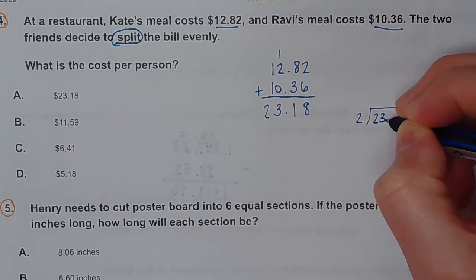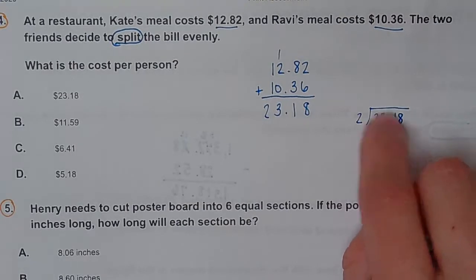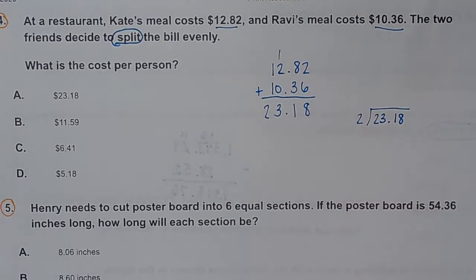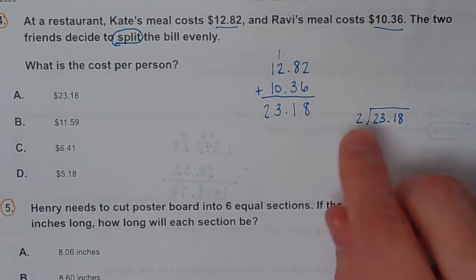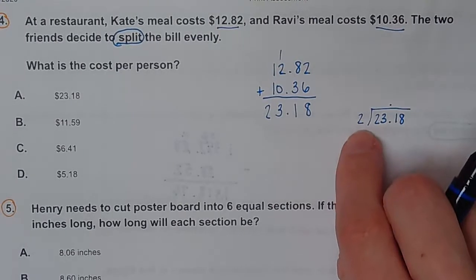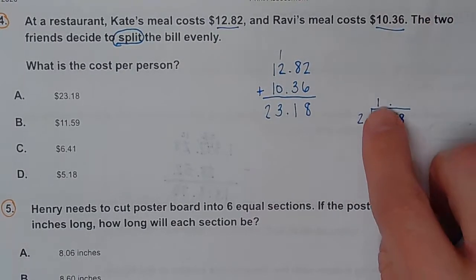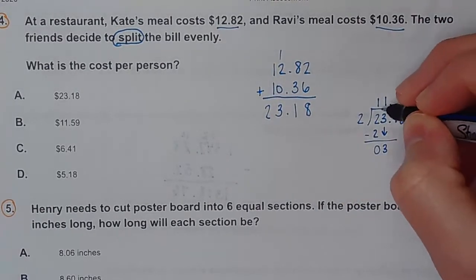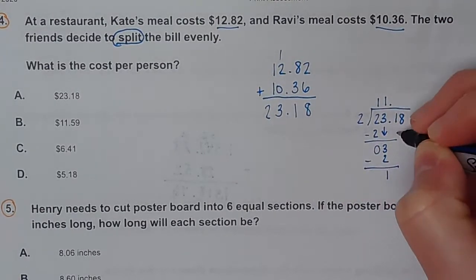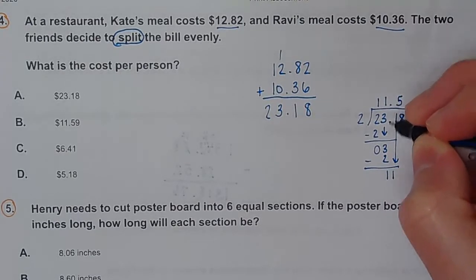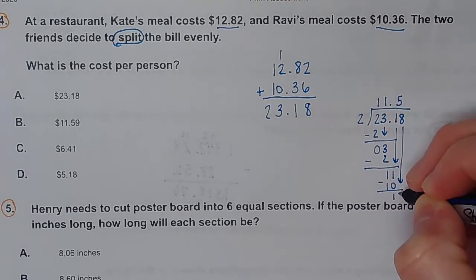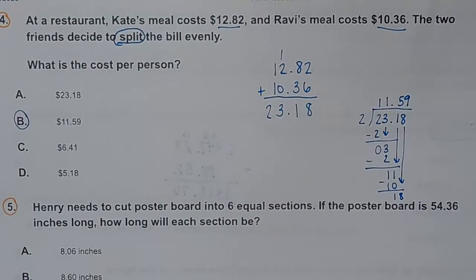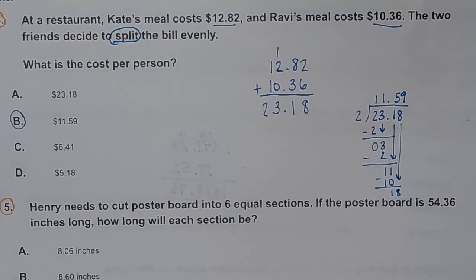We have to figure out how much each person pays, so we're going to divide it by two. Remember, money goes inside the house. You don't want your money laying outside your house because somebody's going to steal it. We don't have to move any decimals because the number on the outside is already a whole number. Bring this decimal straight up. Two goes into two one time. Bring down your three. Two fits into it one time. That's one. Bring down this one. Two goes into eleven five times. Bring down my eight. Two goes into eighteen nine times. So $11.59 is how much each person's paying.